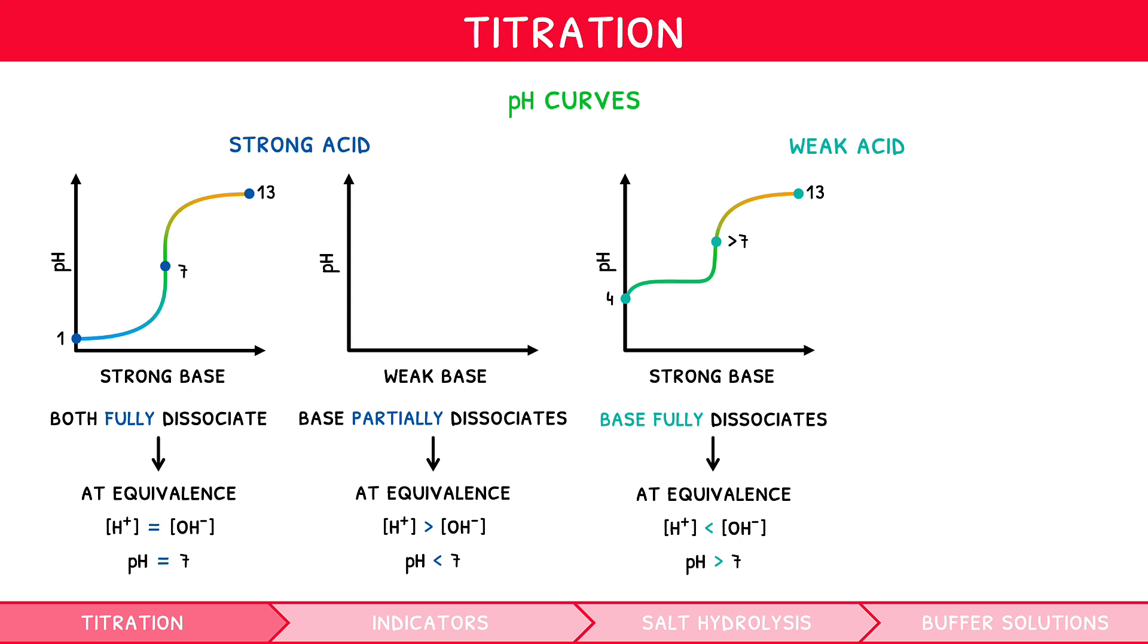Using the example of HCl plus ammonia, our graph would start close to 1, as hydrochloric acid is a strong acid, and finish at 10, as ammonia is a weak base. The shape is identical, although the equivalence point is shifted down, reflecting a pH less than 7.